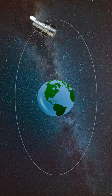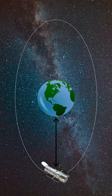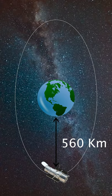The Hubble Space Telescope orbits around the Earth at an altitude of 560 km above Earth's surface.